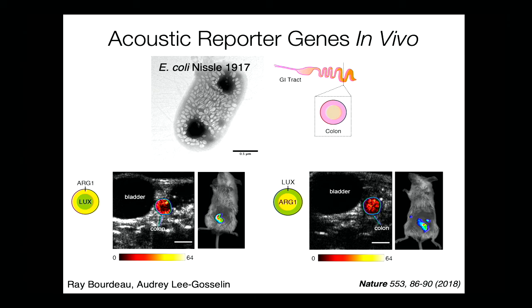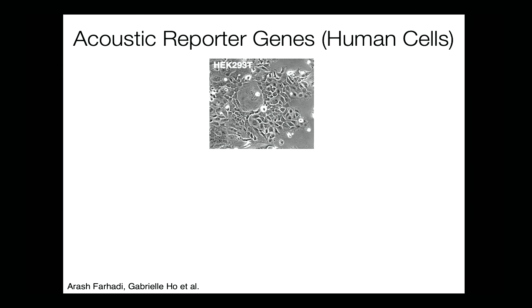To really fulfill the promise as a reporter gene, it can't just work in bacteria. People want to image human cells, immune cells, neurons, etc. So we undertook the challenge of transplanting this genetic machinery to mammalian cells. We didn't know if we could succeed — the largest number of genes people had moved between these domains of life was about four or five. It's particularly hard because these genes make protein products where each must fold and function properly, find each other inside the cell, maintain correct stoichiometries, and assemble into nanostructures.